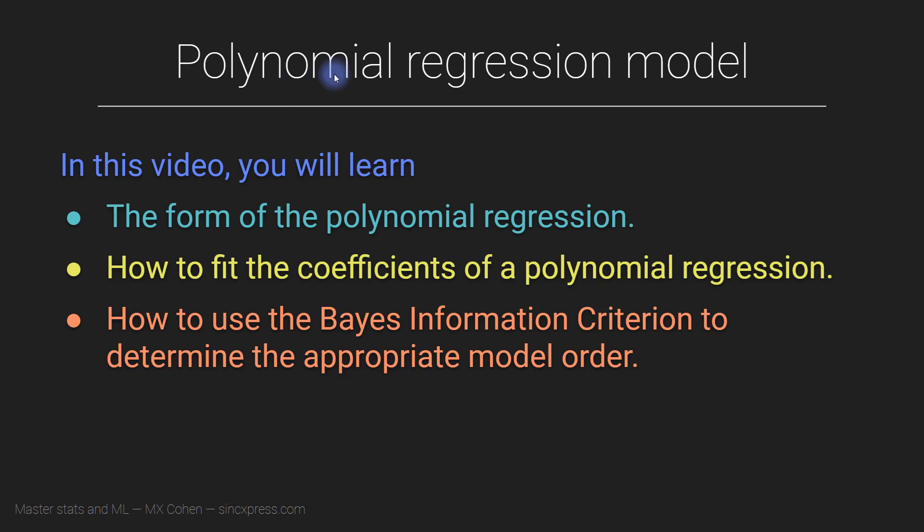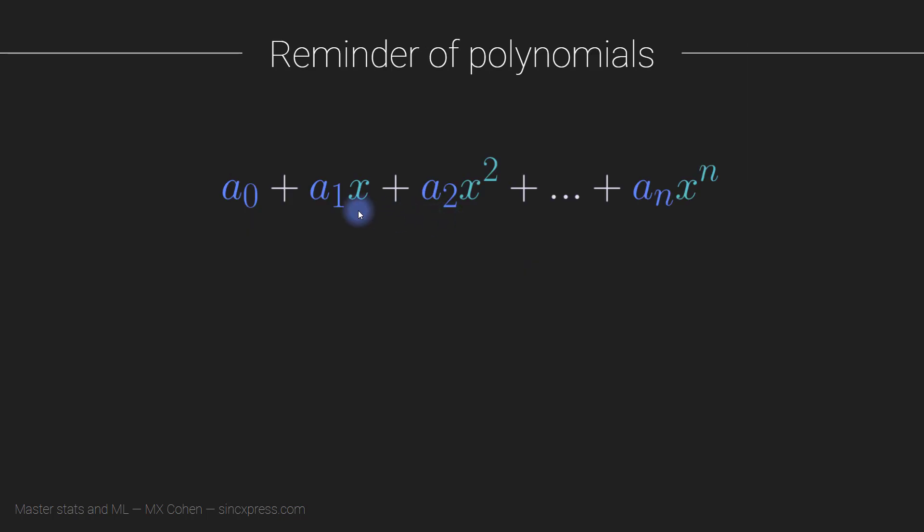I'm going to start by just reminding you of what a polynomial is. A polynomial is basically any expression that looks like this, where we have our data x, and then it's taken to increasingly high powers. And then we have some coefficients that are scaling the data. So a0 is not multiplying by x, but you could think of this as being multiplied by x to the zero.